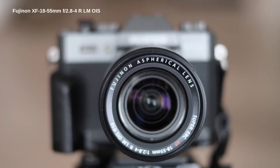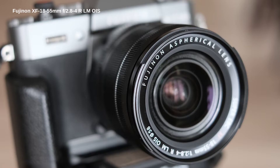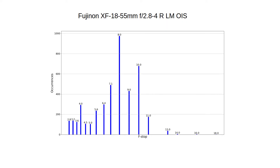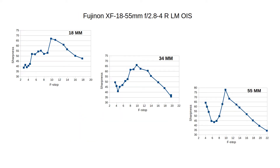The first lens is the Fuji XF 18-55 kit lens. I've used this lens extensively, especially for all-purpose photography. The histogram shows how often I've used each f-stop — occurrences on the y-axis and f-stops on the x-axis, with numbers above the bars representing the f-stops. This figure highlights my use of intermediate f-stops; I seem to favor the f8 to f10 range for maximum sharpness. The lens sharpness graph is also shown — the dip in sharpness at longer focal lengths is noticeable and I see it every time with this lens.